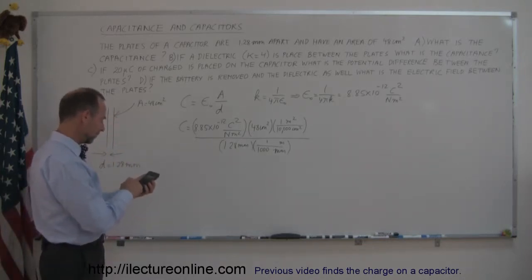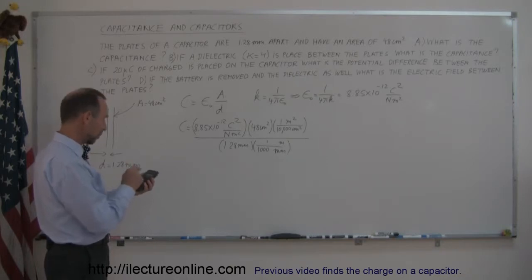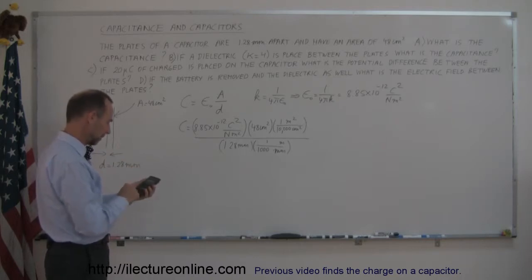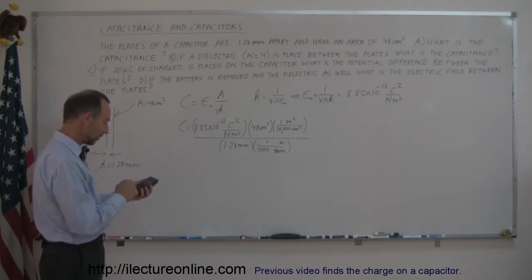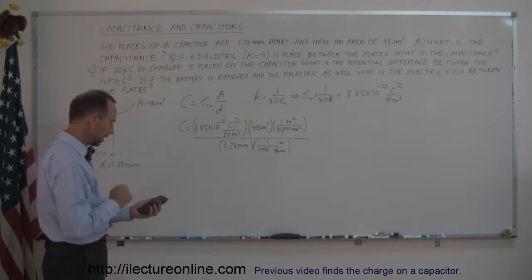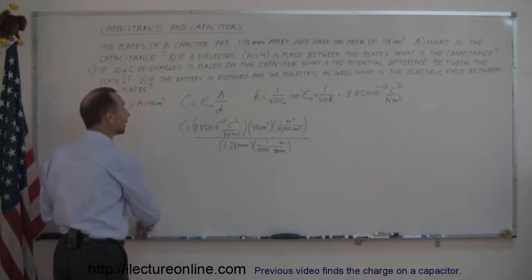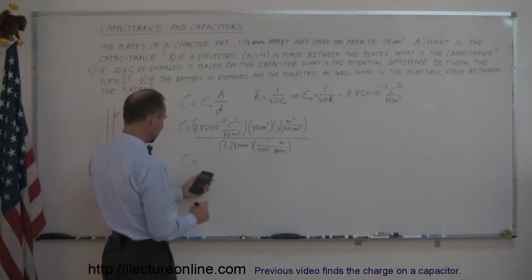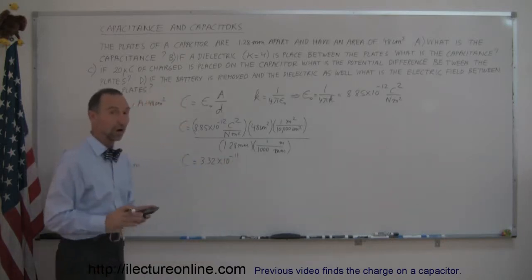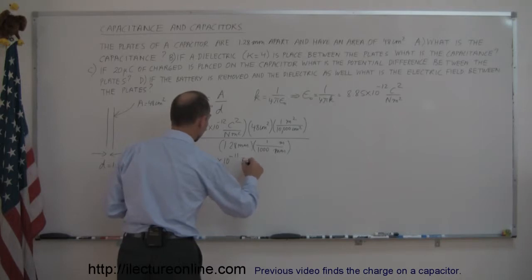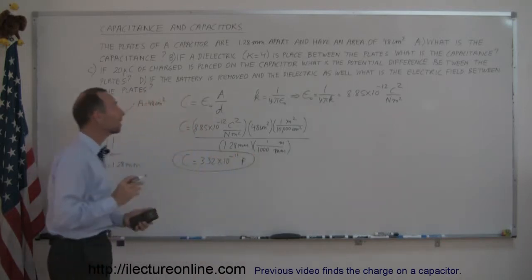Calculating: 8.85 times 10 to the minus 12, multiplied by 48, divided by 10,000 for the area conversion, divided by 1.28, then multiplied by 1,000 for the distance conversion. We get the capacitance equal to 3.32 times 10 to the minus 11 farads. That's the answer to part A — the capacitance found from its physical dimensions.